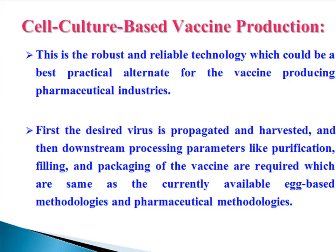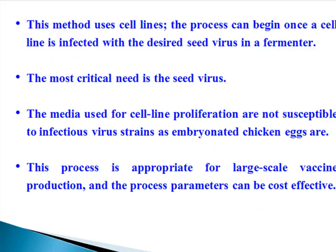Cell culture-based vaccine production is a robust and reliable technology which could be the best practical alternate for the vaccine-producing pharmaceutical industries. First, the desired virus is propagated and harvested, and then downstream processing parameters like purification, filling, and packaging of the vaccine are required, which are the same as the currently available egg-based and pharmaceutical methodologies. This method uses cell lines. The process can begin once a cell line is infected with the desired seed virus in a fermenter. The most critical need is the seed virus. The media used for cell line proliferation are not susceptible to infectious virus strains as embryo-netted chicken eggs are.